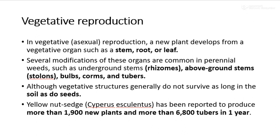Another propagation method is asexual propagation, that is vegetative reproduction. Vegetative reproduction means the development or multiplication of plants by means of vegetative plant parts such as stem, root, leaf, runners, stolons, rhizomes, etc. Asexual propagation is also called vegetative reproduction.